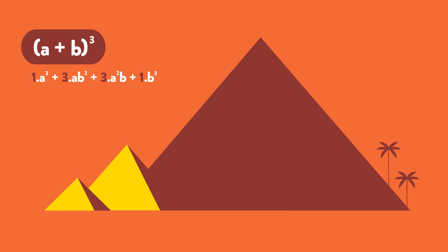And so Newton connected his problem — the a plus b — to a triangle named, I don't know why, Pascal's triangle. The triangle is built this way: you start with one, and each number is the sum of the two digits above it. One, two, one. One, three, three, one. One, four, six, four, one.